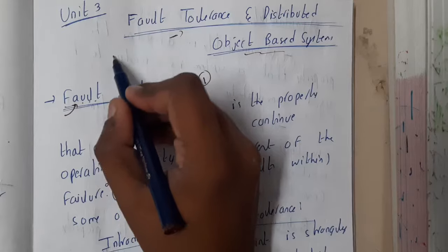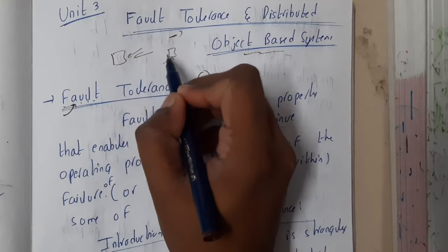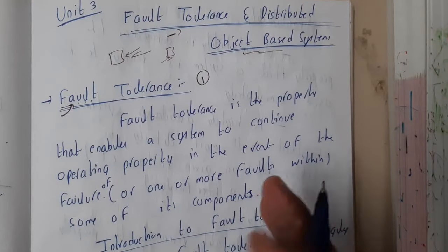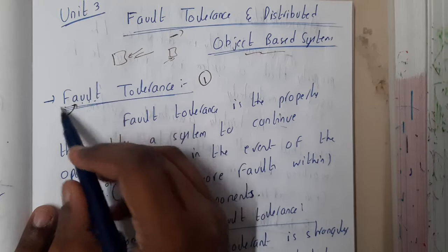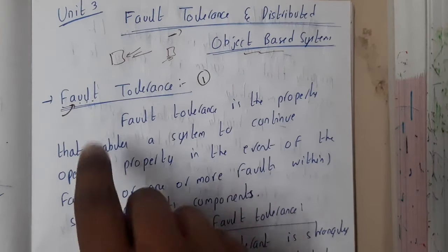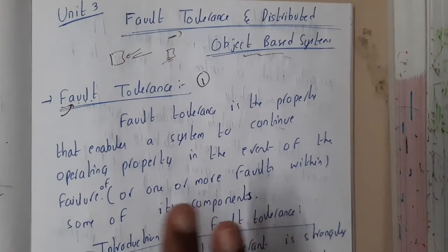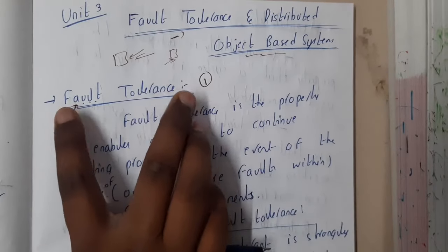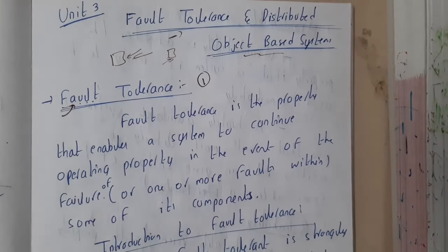Assume that you bought a computer and they said there is a fault in the system — there is something bad which could lead to further issues. So fault tolerance means you are trying to stop that issue. When it comes to a distributed system, the definition changes a bit.